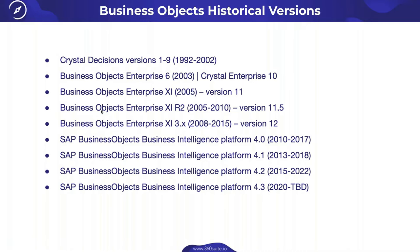Crystal stayed very popular over the years because of that pixel-perfect capability, which you also have in WebI today — that was a core strength of Crystal. Then there was a big rivalry between Crystal and Business Objects. Business Objects was a French company and they would call it 'BO' — B for Business and O for Objects. Crystal picked up on that and said 'BO' means body odor.